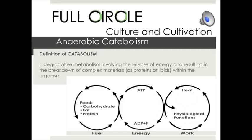This process is a means of taking carbohydrates, fats, and proteins and processing them into energy. That energy can then fuel physiological functions such as plant cell growth. The Full Circle Project applies effective microorganisms, also known as probiotics, to food waste, which in turn breaks down the complex organic waste, resulting in catabolization.